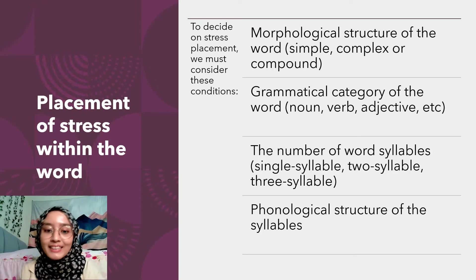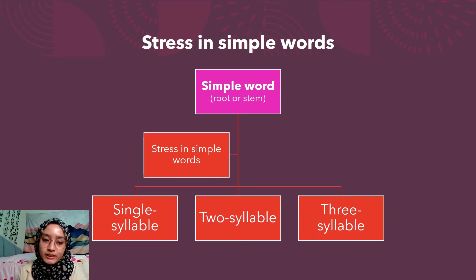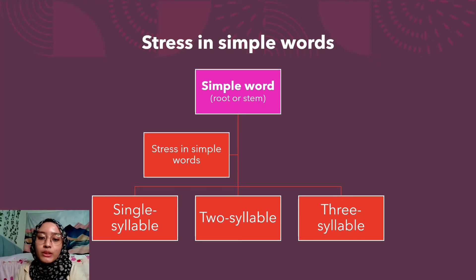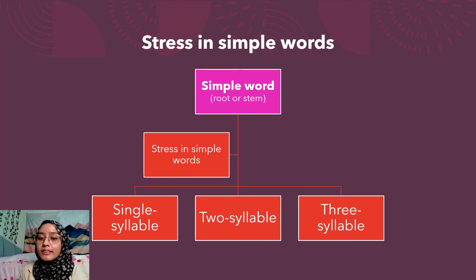Okay, so let's get right into it. First and foremost, stress in simple words. Simple words here basically refer to the root word or stem. I'll break it down into three parts, which is single syllable, two syllable and three syllable. So let's take a look at each number of syllables.